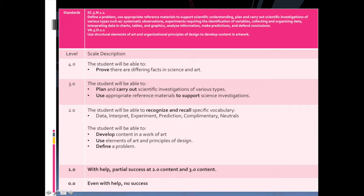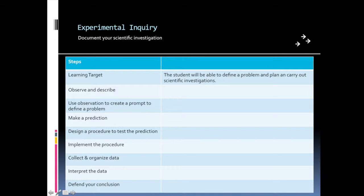Our county uses Marzano's Art and Science of Teaching model as a basis for our instruction. Learning goals and scales accompany every unit. The scale starts at zero, with the learning goal based in three: students will be able to plan and carry out scientific investigations of various types and use appropriate reference material to support the investigations. I strategically grouped the class into teams and provided them with handouts to help guide and document their learning.